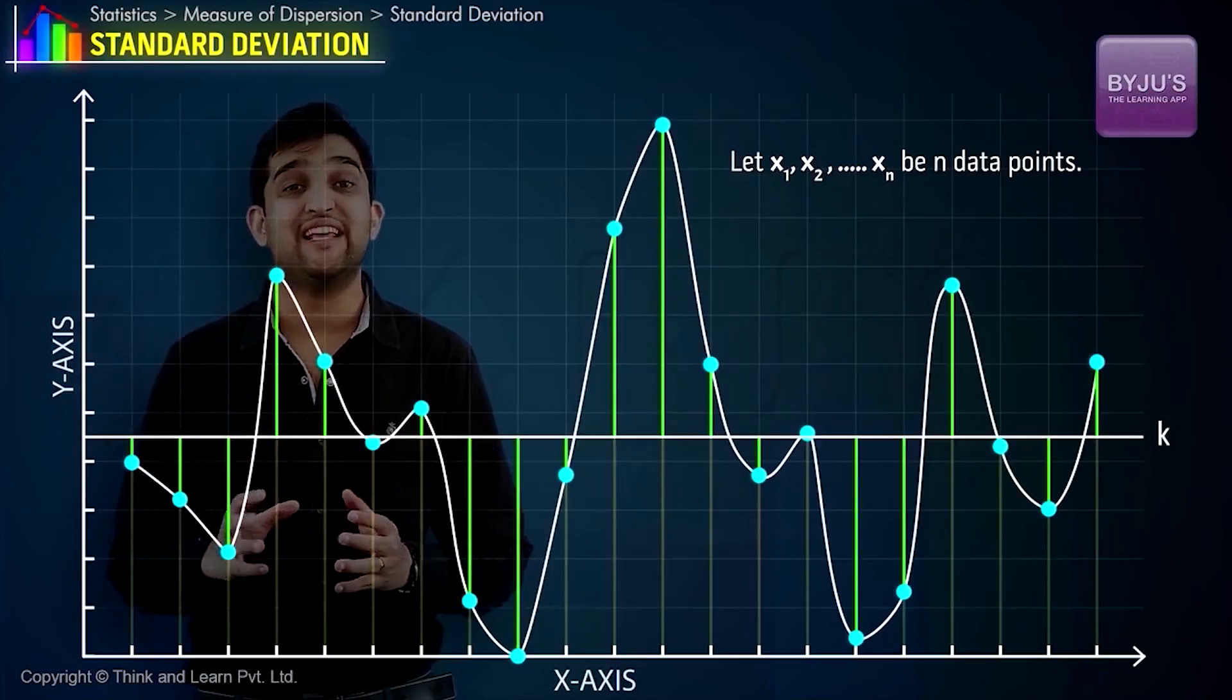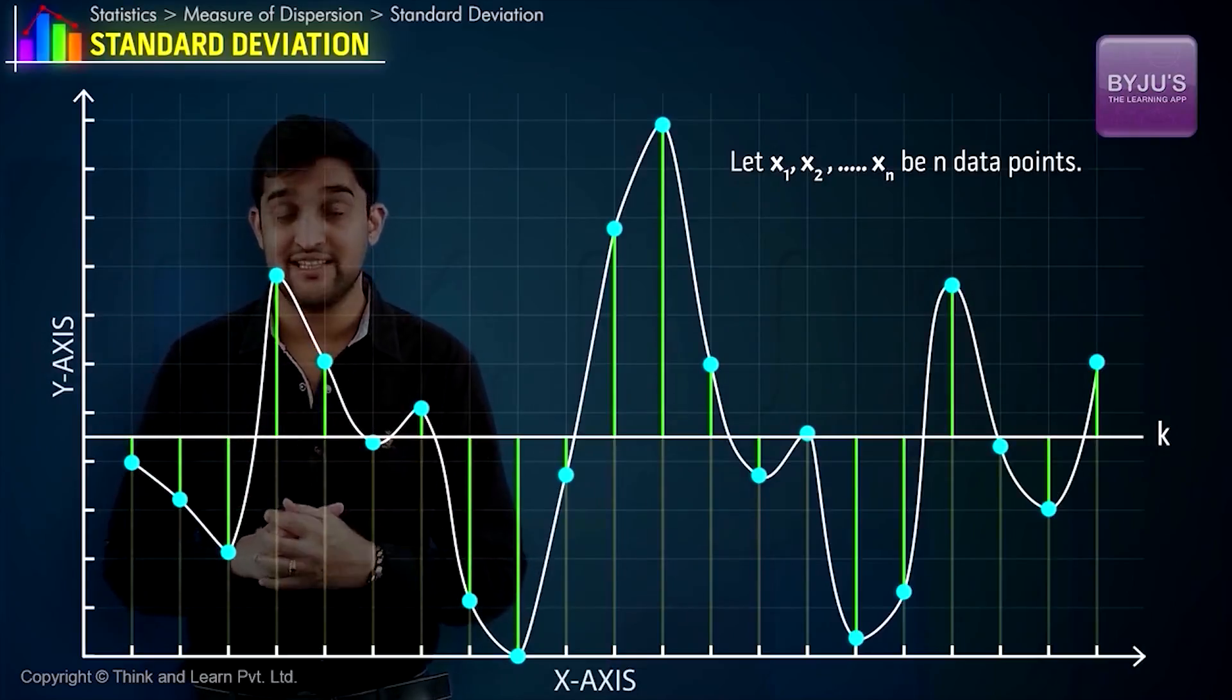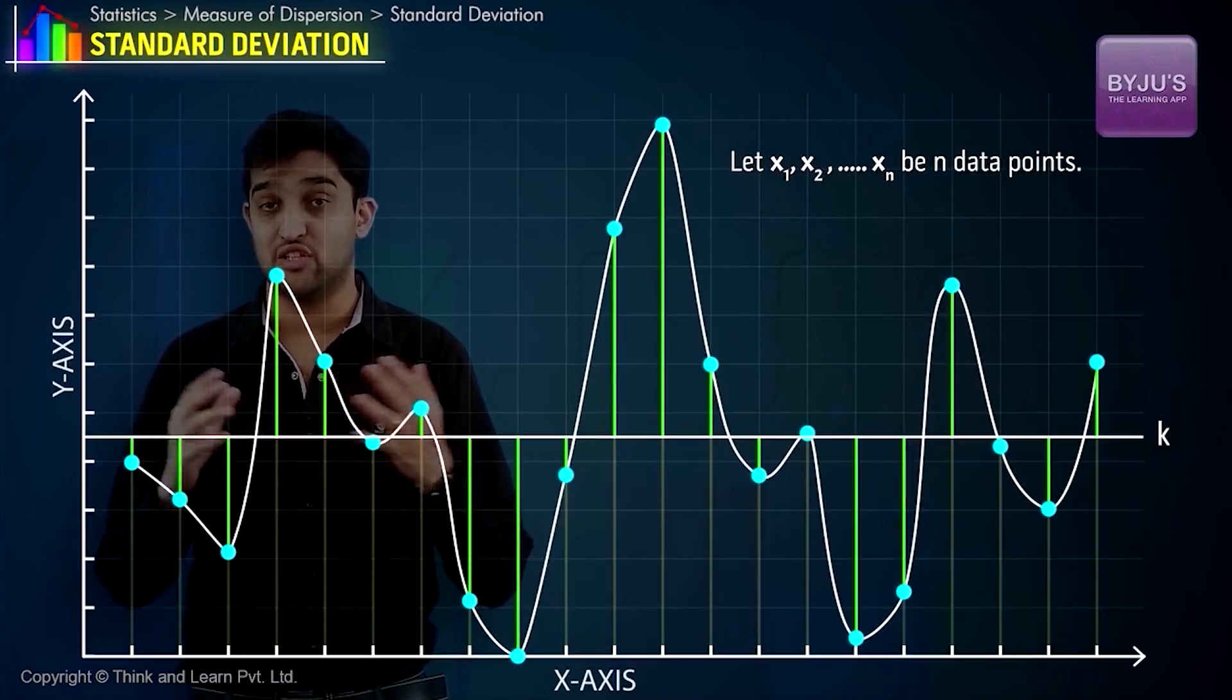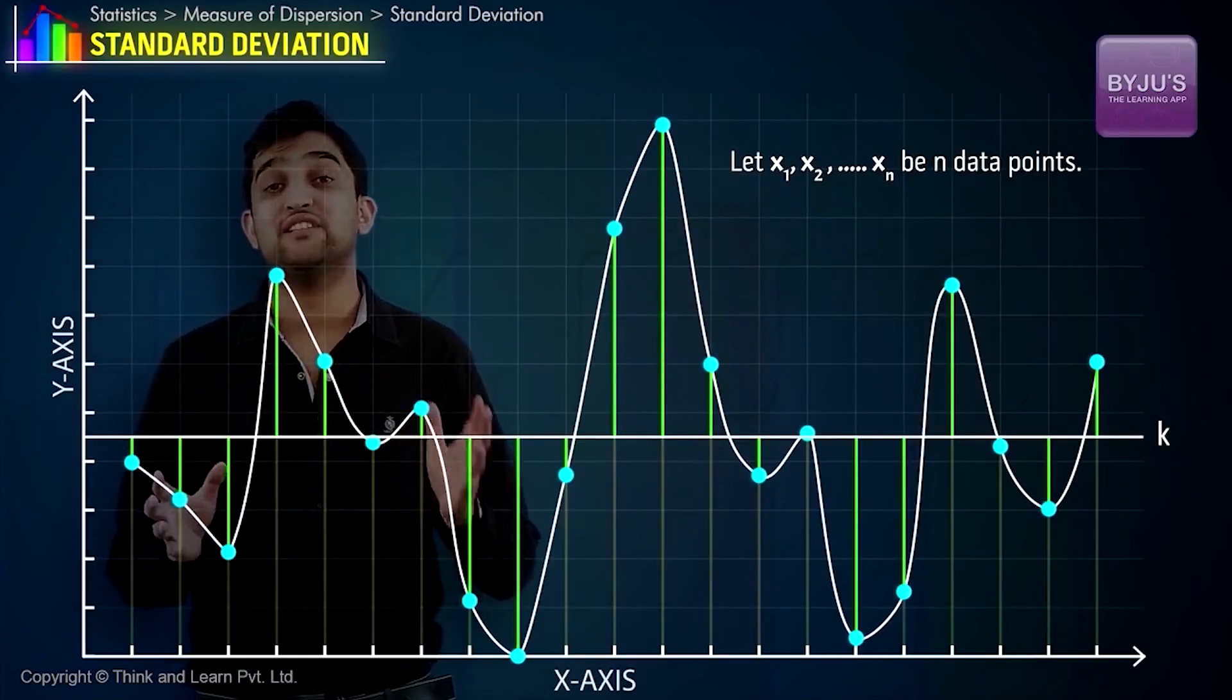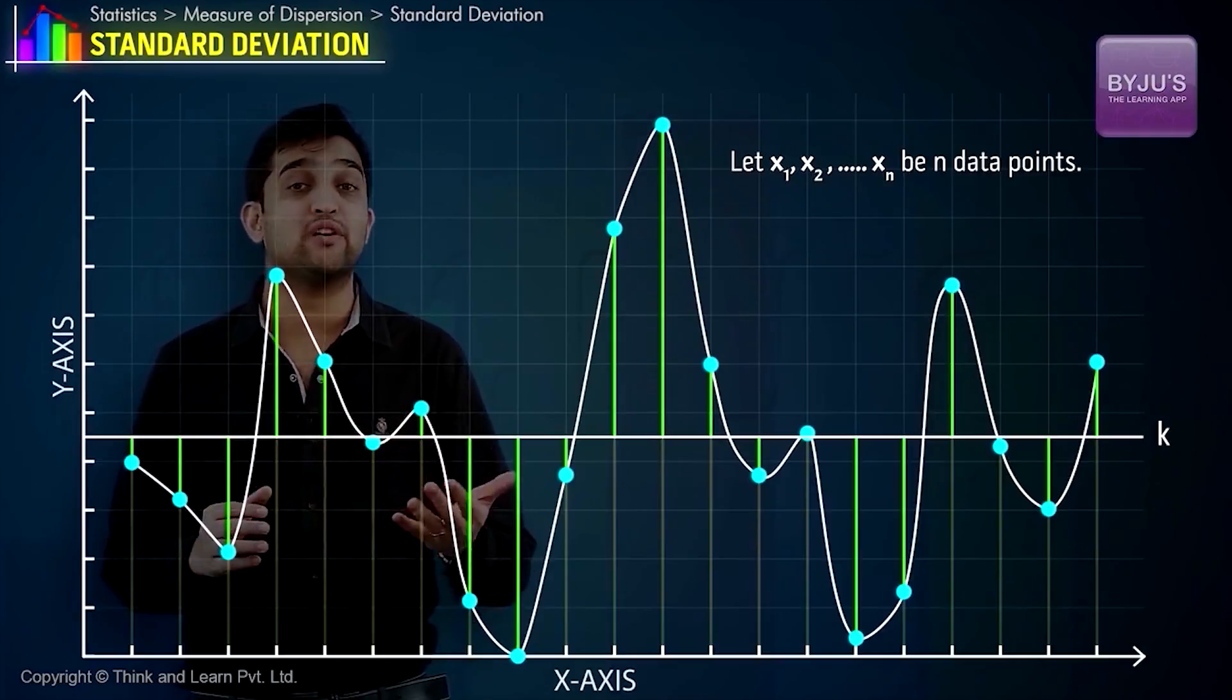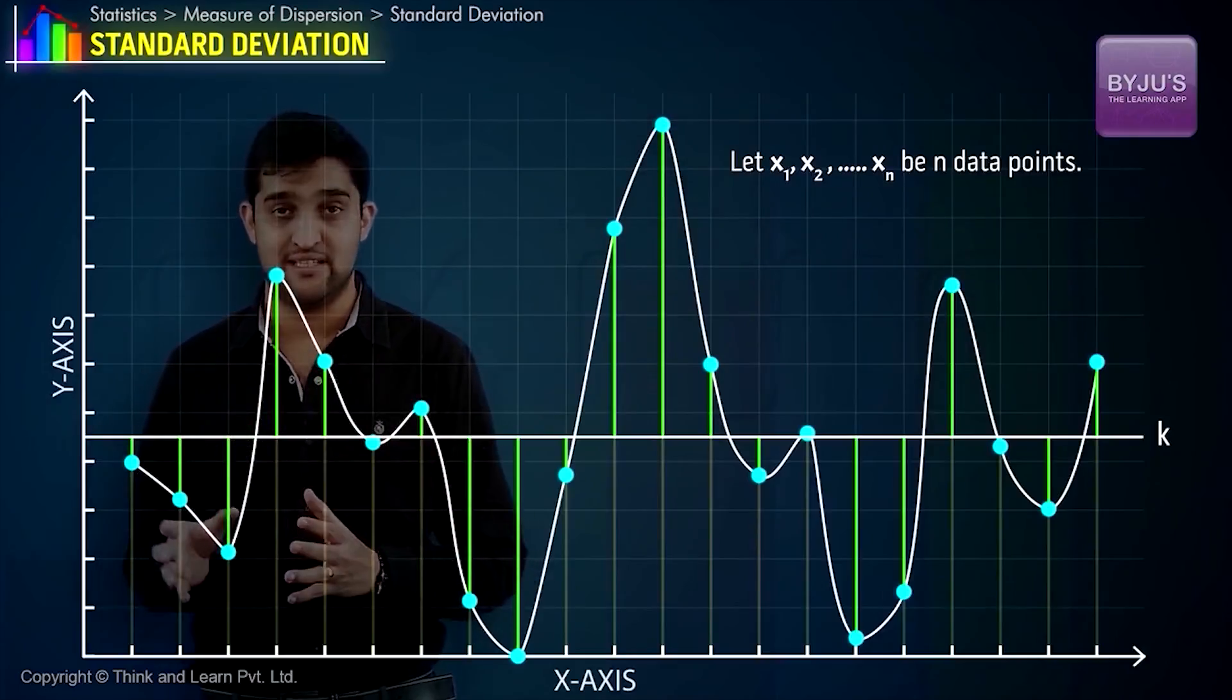For standard deviation, we take the squares of these deviations, that's (xᵢ - k)² for all i. Taking the sum of these squares and dividing by the total number of observations gives us the variance.